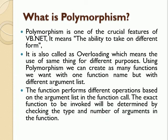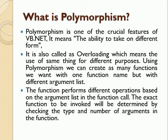Another concept of OOPs is polymorphism. Polymorphism is one of the crucial features of VB.net and means the ability to take on different forms — more than one form. It is also called overloading, which means the use of the same function name for different purposes. Using polymorphism, we can create as many functions as we want with one function name but with different argument lists. The function performs different operations based on the argument list, and the exact function to be invoked is determined by checking the type and number of arguments. This covers all the OOPs concepts; when a language follows all these concepts, it is considered an object-oriented programming language.